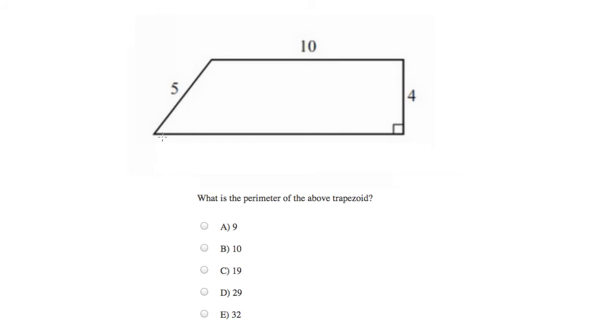...there's only one side we don't know the value of—it's the bottom—but it's hard to figure that out without adding the following line. I'm going to drop a line straight down from the upper left-hand corner, perpendicular to the base. I did that very carefully so that the shape on the right would become a rectangle.